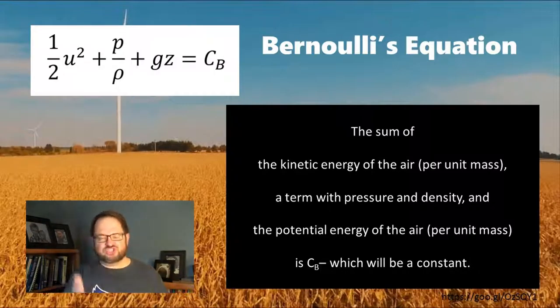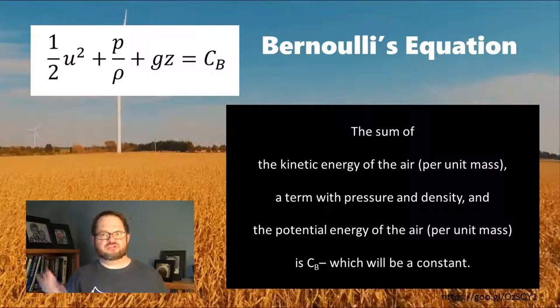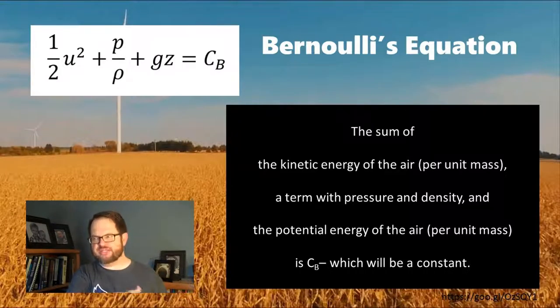Now that might not ring a bell to you, but you actually saw that term when you took general physics. g, the acceleration of gravity, times z, the height you are above the ground, is potential energy. You did examples of that in physics lab where you had the potential energy of the little car before you ran it down a ramp or something like that. And the potential energy was g times z. This equals some cb. cb is going to turn out to be just a constant. It's actually a constant you can't know. There's no way to know what the sum would be. But what we do know is that once you have a value, like for a given air parcel, cb is not going to change, at least not over relatively short periods of time.